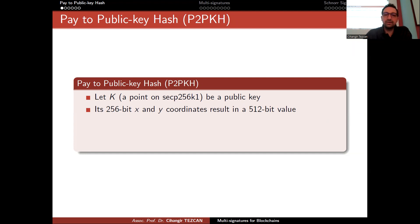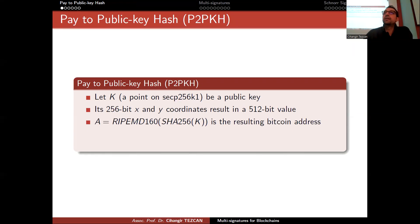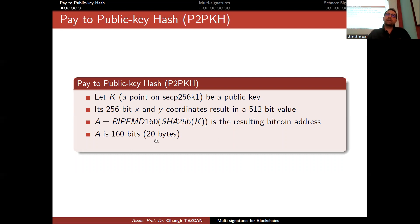Instead of using the full 512-bit point, we do the following: take the public key, first compute SHA-256 of it, then compute RIPEMD-160 of it. Let's say the result is A. This is the resulting Bitcoin address — this is what the money is actually sent to. The result is 160 bits, which is 20 bytes.